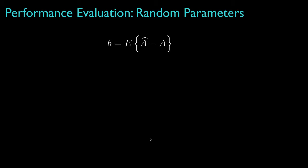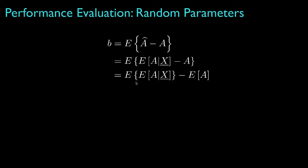Let's look at the bias for the minimum mean square error estimator. Recall that, regardless of the model, the minimum mean square error estimator is always the conditional mean of the parameter conditional on the data. The bias, then, is the expected value of the conditional expected value for the parameter minus the expected value for the parameter. But by using iterated expectations, the expected value of the conditional expected value of the parameter is always equal to the expected value for the parameter.